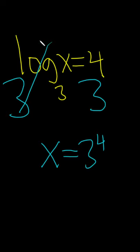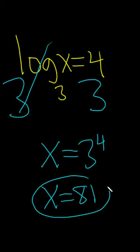You can always do that, okay? This whole thing becomes your exponent, and then this will just cancel. 3 to the 4th is 81, so the final answer to this problem is 81. Good luck.